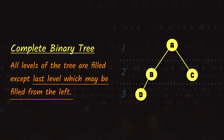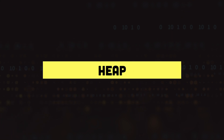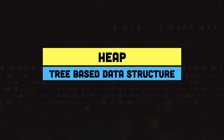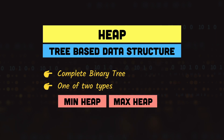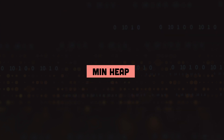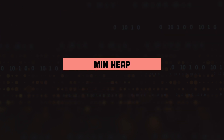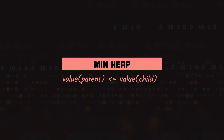Alright, enough about the trees — let's look at the heap data structure. Heap data structure is a tree-based data structure with two properties: first, it is a complete binary tree, and second, it follows the properties of either a min heap or a max heap. In a min heap, the value of each parent node of the tree is less than or equal to the value of its children.